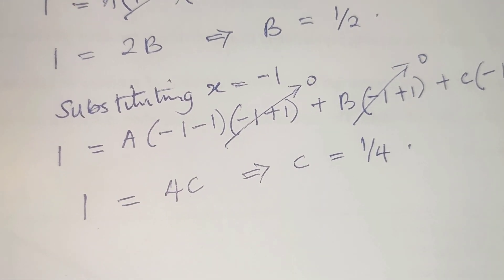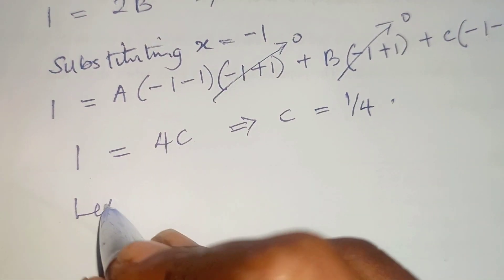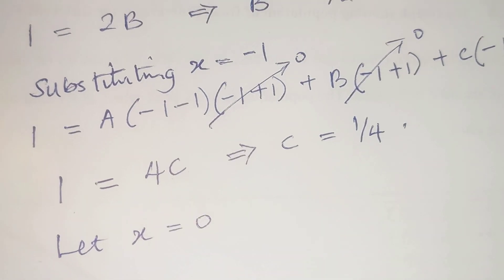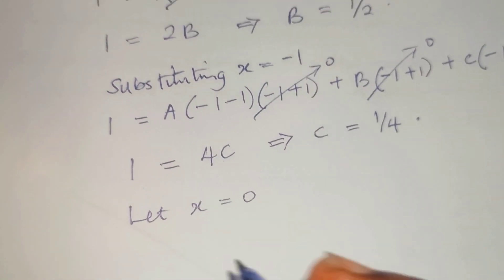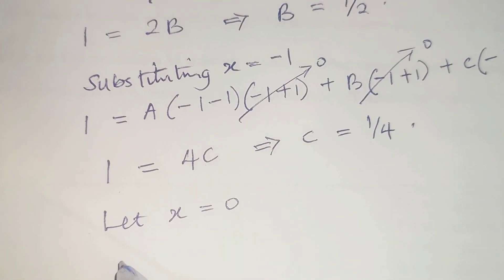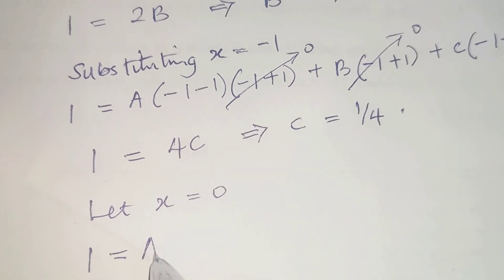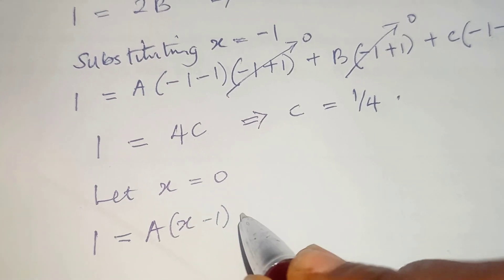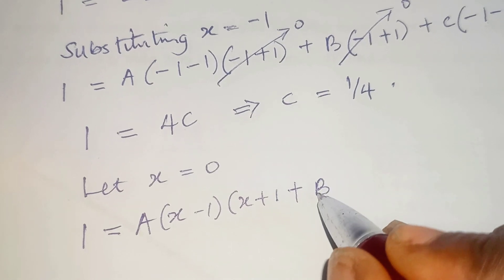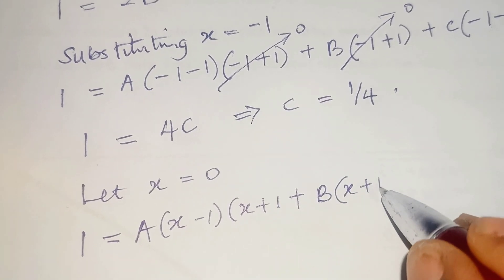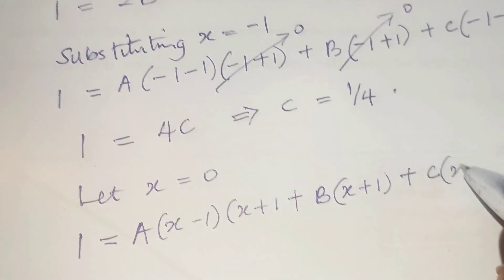Next, we will get a value for A. Let's set x equal to 0 and substitute into equation star. That gives 1 equals A(0 minus 1)(0 plus 1) plus B(0 plus 1) plus C(0 minus 1) squared.